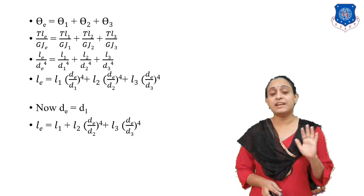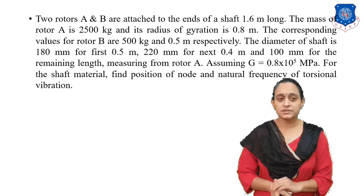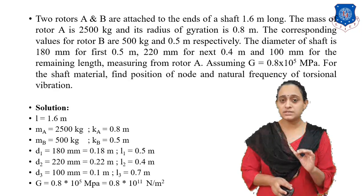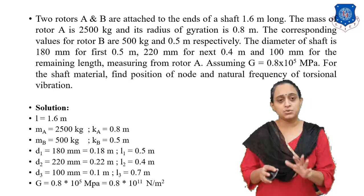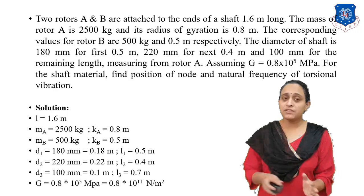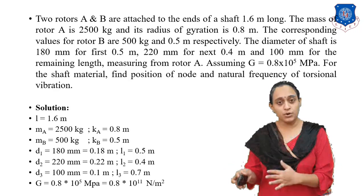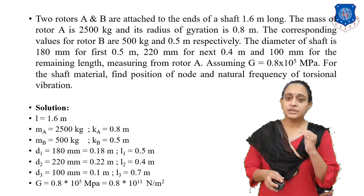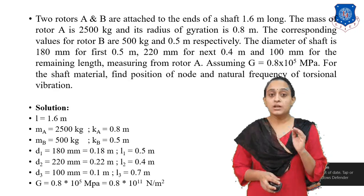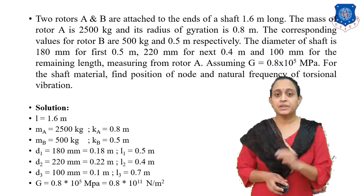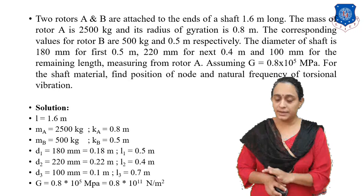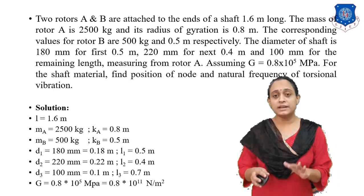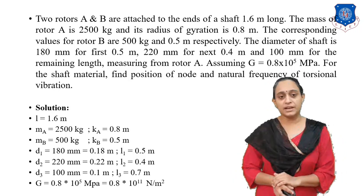Now let us check the numerical. The data: Two rotors A and B attached to the ends of a shaft 1.6 meters long. Mass of rotor A is 2500 kg, radius of gyration 0.8 m. For rotor B, mass is 500 kg and radius of gyration is 0.5 m. Shaft diameter is 180 mm for the first 0.5 m, 220 mm for the next 0.4 m, and 100 mm for the remaining length measured from rotor A. Modulus of rigidity is 0.8 times 10^11 N/m². Find the position of node and natural frequency of torsional vibration.